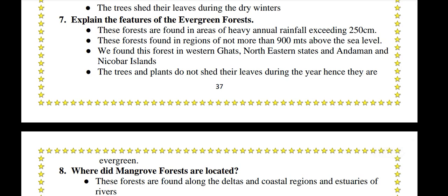Explain the features of the evergreen forests. These forests are found in areas of heavy annual rainfall exceeding 250 cm, in regions not more than 900 meters above sea level. They are found in the Western Ghats, northeastern states, and Andaman and Nicobar Islands. The trees do not shed their leaves during the year, hence they are evergreen.